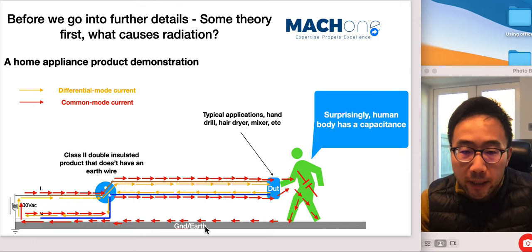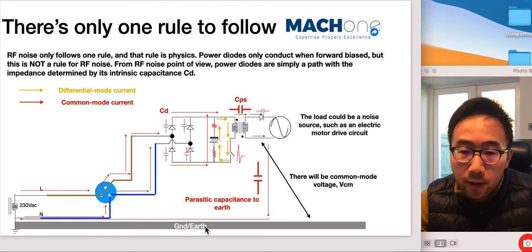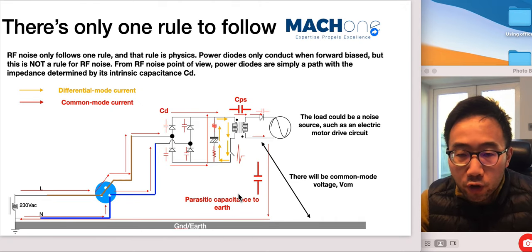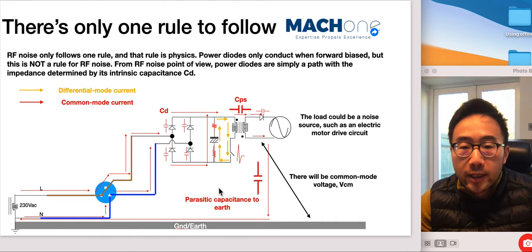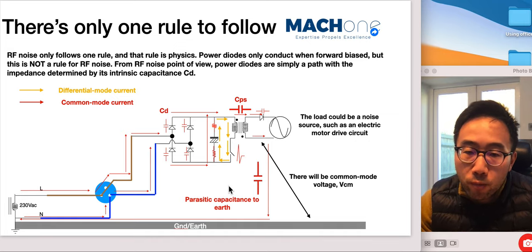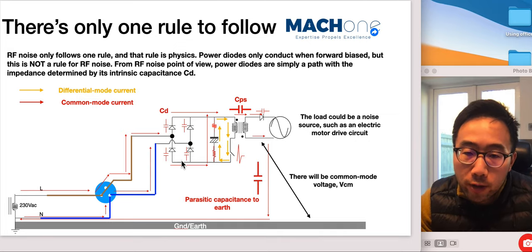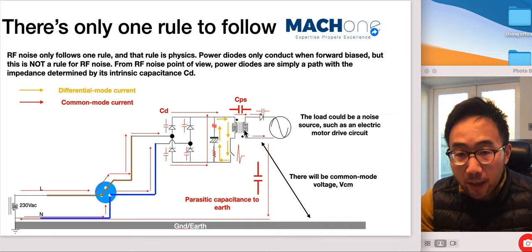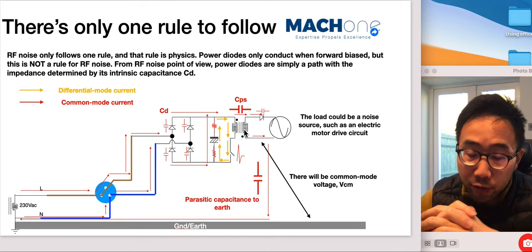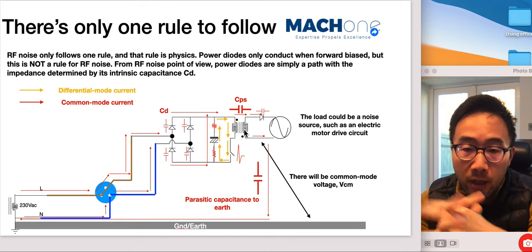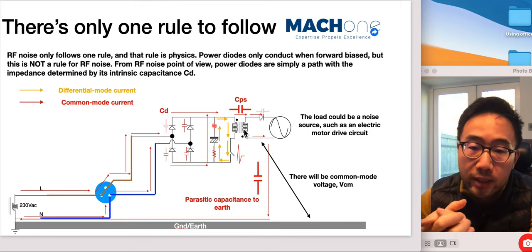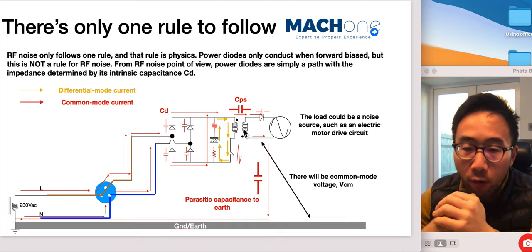What does it mean? Let's have a look. I think this probably is much easier to understand. In this case, we have a simple model to demonstrate. We have a mains powered product, but then we have a switch mode power supply, isolated switch mode power supply, which is a flyback converter. In this case, as you can see, as the switch switches on and off,